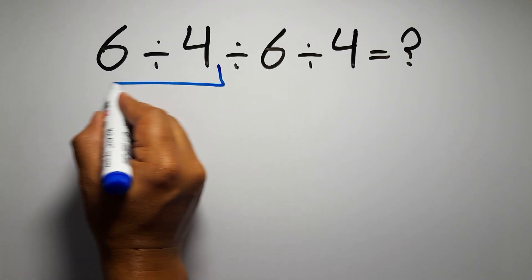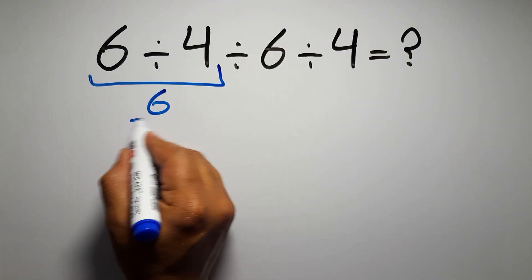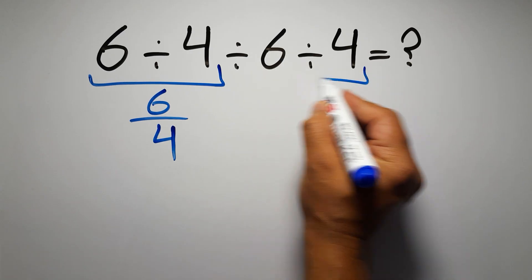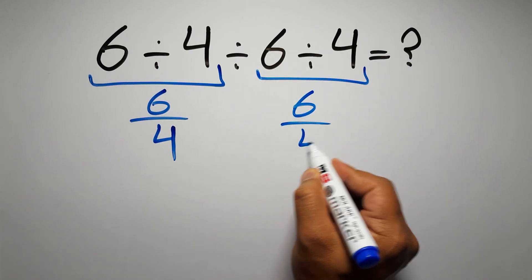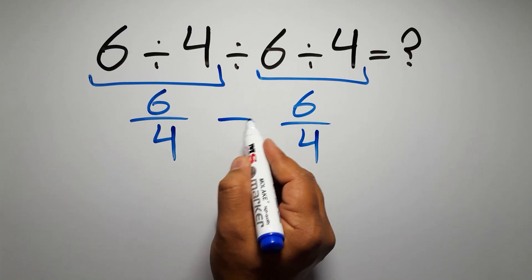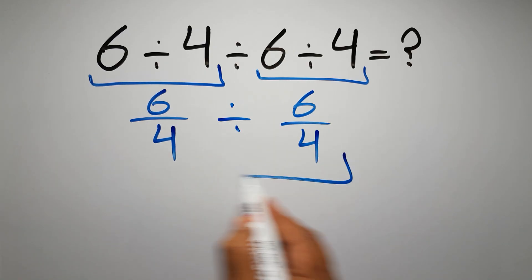6 divided by 4 can be written as 6 over 4, and again here we have 6 divided by 4, so 6 over 4 divided by 6 over 4 is just 1.